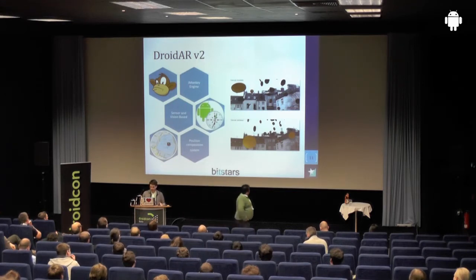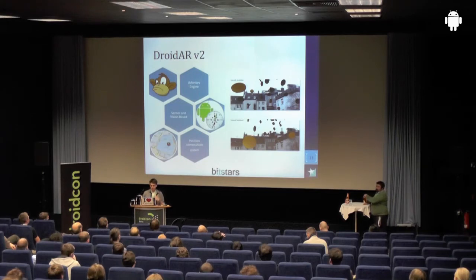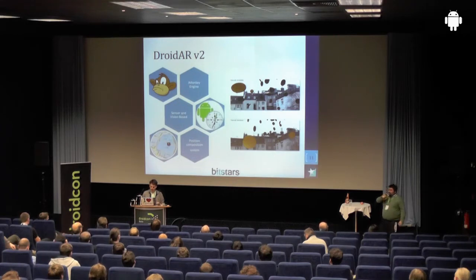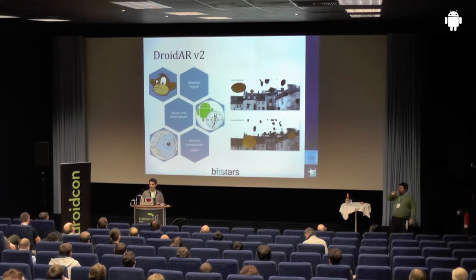I will introduce the second version. For example, we exchanged the complete rendering engine. In the first version we did all that on our own — just a small, easy wrapper around OpenGL 1. Now we removed this and exchanged it for the JMonkey engine. Maybe some of you know it — it's a really big open source game engine, which is also cross-platform and has features like 3D physics built in, comparable to Unity or anything else like this. I will also go into the new vision stuff and the composition system, which combines the computer vision algorithms with the already built-in step detection and localization methods we used also in version 1.